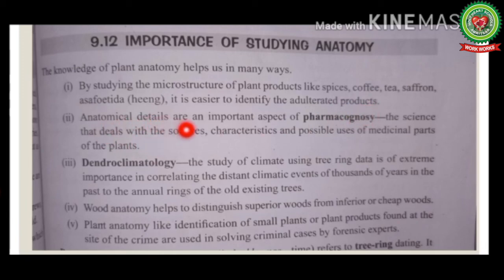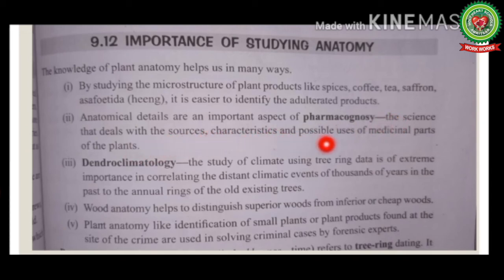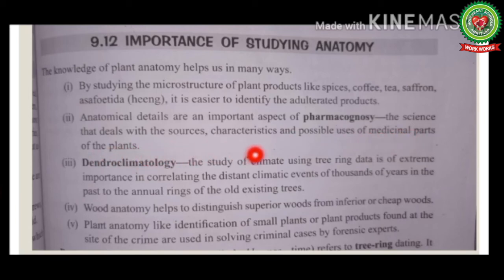Anatomical details are an important aspect of pharmacognosy — the science that deals with the sources, characteristics, and possible uses of medicinal parts of plants. For example, leaves of the neem plant can be used for anti-acne purposes.